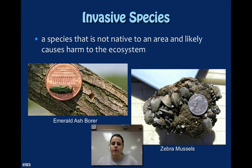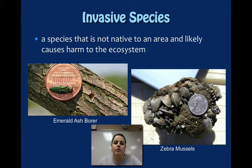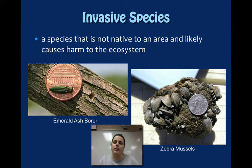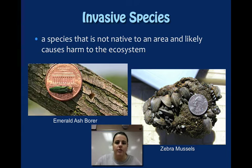Over here we have zebra mussels. Zebra mussels got introduced into Lake Erie and all the rest of the Great Lakes through the hulls of ships as they came in through the St. Lawrence Seaway. They were introduced into the Great Lakes and started to take over — they competed with other species and are over-reproducing. Other species are starting to decline because their niches overlap and there's high competition for resources. So those are invasive species.